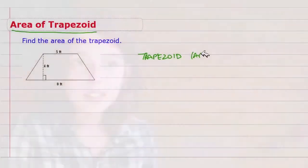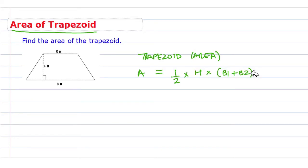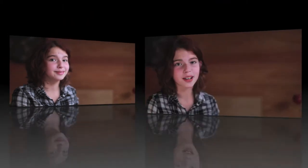The area of a trapezoid — the area A equals one-half times the height of the trapezoid times base one plus base two. Let me explain what base one plus base two is. So in this case, height is this one. Building stronger foundations, one click at a time.